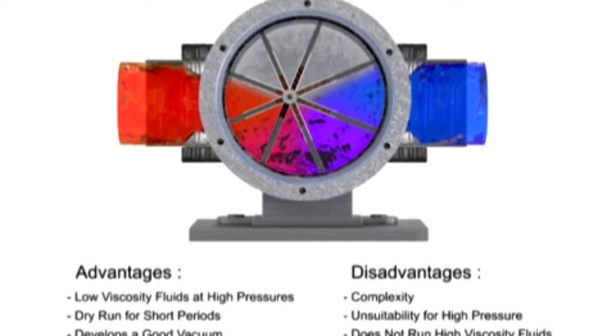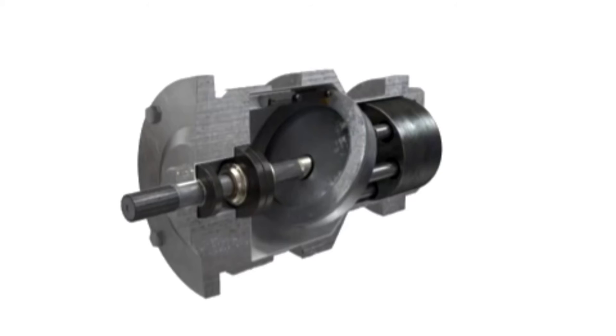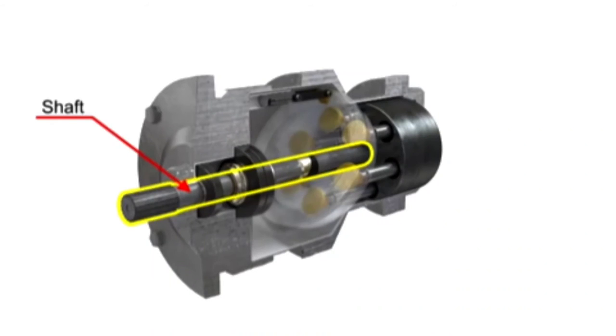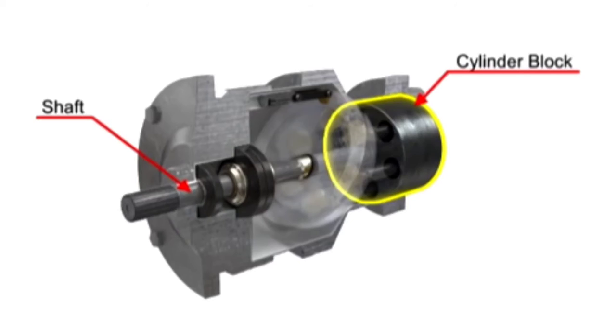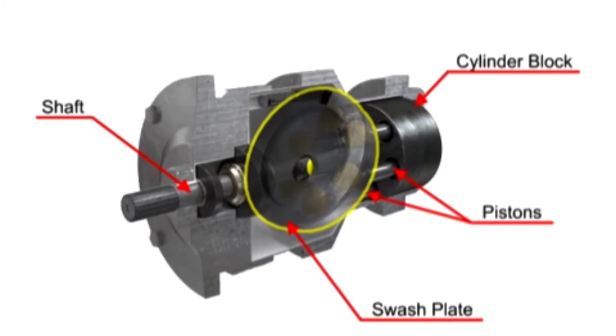Piston pumps come in many different forms. A swash plate is a device used to translate the motion of a rotating shaft into the reciprocating motion of a piston. Swash plate piston pumps have a rotating shaft connected to a cylinder block containing pistons, which are pressed against a stationary swash plate that sits at an angle to the cylinder.